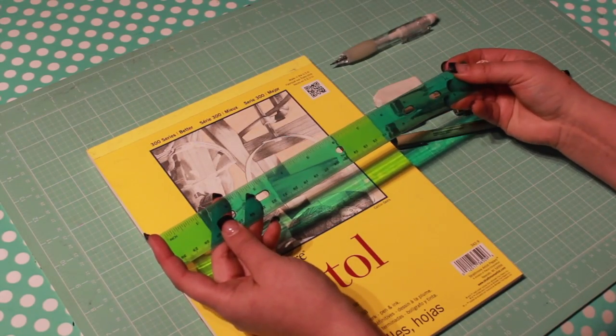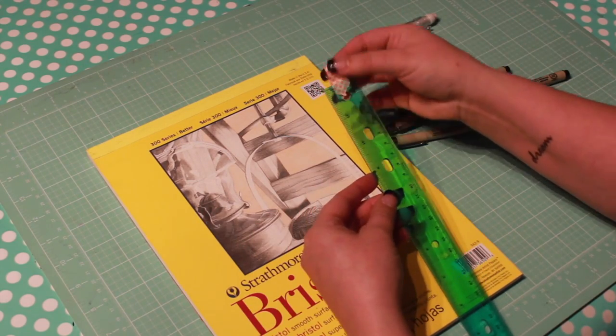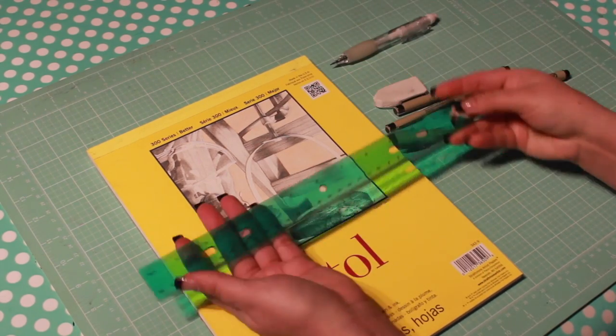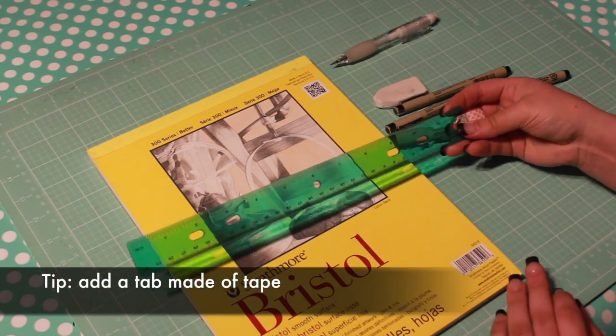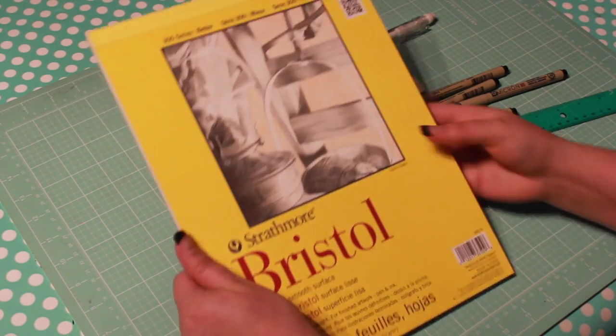You'll need a transparent ruler. I actually buy these in packs of three from the dollar store. There's no need to spend a lot of money on a ruler. Just make sure you choose one that you can see through. I like to add a tab made of tape to one end, as it gives me an easy way to lift the ruler from the paper without having to slide it across wet ink.